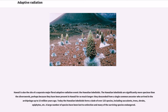Hawaii is also the site of a separate major floral adaptive radiation event: the Hawaiian lobelioids. The Hawaiian lobelioids are significantly more speciose than the silverswords, perhaps because they have been present in Hawaii for so much longer — they descended from a single common ancestor who arrived in the archipelago up to 15 million years ago. Today the Hawaiian lobelioids form a clade of over 125 species, including succulents, trees, shrubs, epiphytes, and more. A large number of species have been lost to extinction and many of the surviving species are endangered.